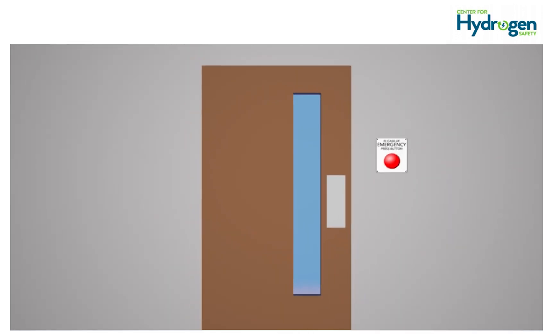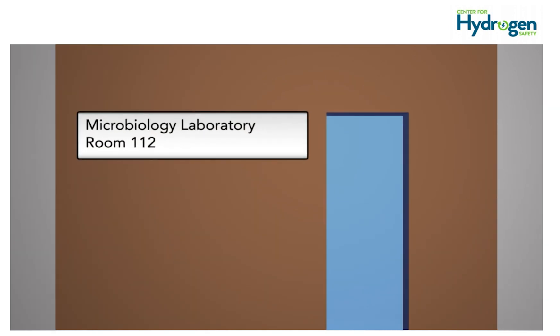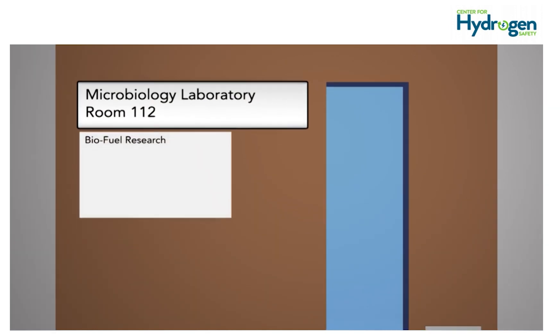The following information should be posted at the entrance and exits of any workspace where hydrogen is used or stored, in clear view of all who enter: the name of the workspace and room number, and the activity being conducted.